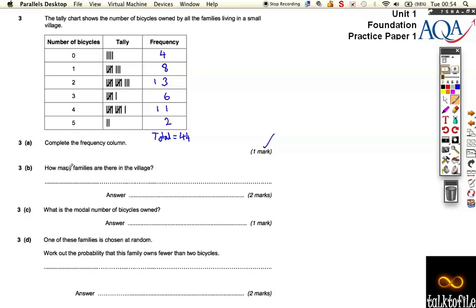Ok let's move on to B, how many families are there in the village? Ok so I've already answered this, because I've already added up my frequency column, so there are 44 families in the village.